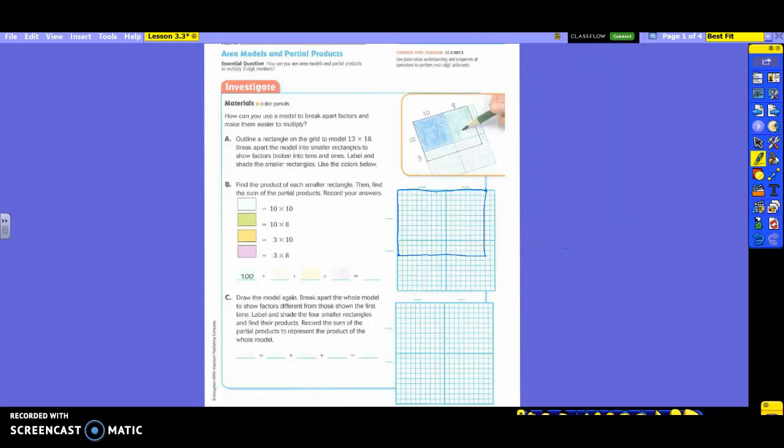You're going to get out one color at a time here as we do this. So now it says to break apart that model into smaller rectangles to show factors that are broken into tens and ones. Now, if we're breaking this up, we want to do it in the easiest way possible. So if I'm breaking this up, what is an easy way to do that? You have 13 times 18. So how can I break this up to make it a little bit easier on myself? Remember what we always want to go to if we possibly can.